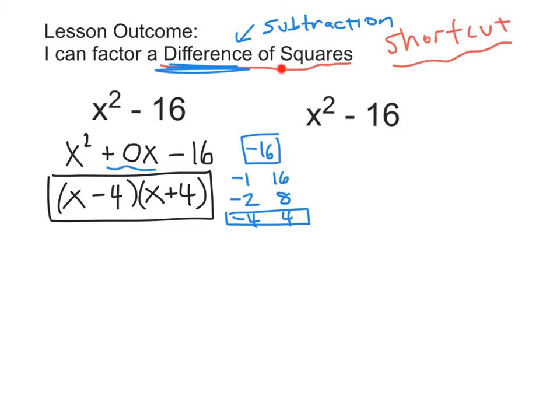When we have a difference of two perfect squares, we can simply write the perfect square of this, which is x times x, and the perfect square of this, which is 4, and we can write 4 times 4. And then we make one of them negative and one of them positive, and that will always end up getting us a 0 for a middle term, which means we just have the two terms.